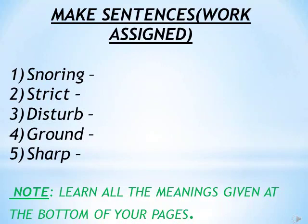Students, in this slide, work has been assigned to you — making sentences. Five words are written: number 1, snoring; number 2, strict; number 3, disturb; number 4, ground; number 5, sharp. I hope you all will complete your work so that in the next class we can discuss it. Note, children: you need to learn all the meanings given at the bottom of your pages. Quick answers and reference to the context will be discussed or given to you in the next class.